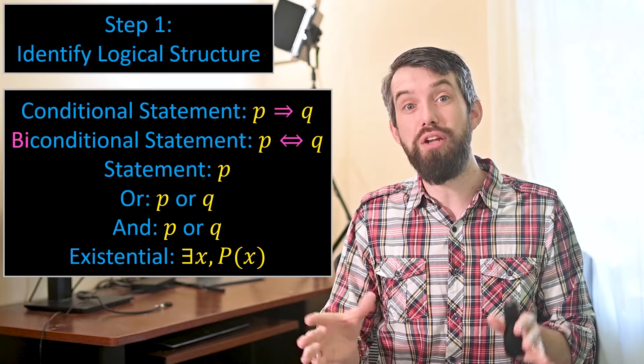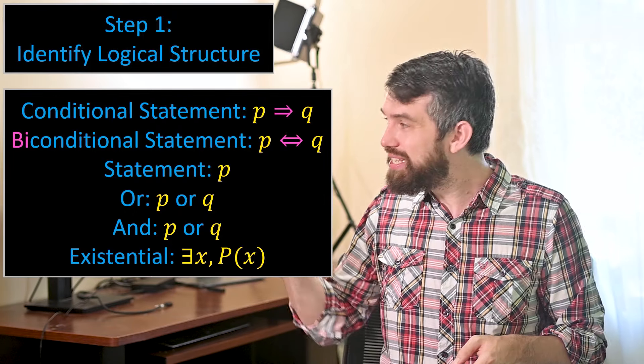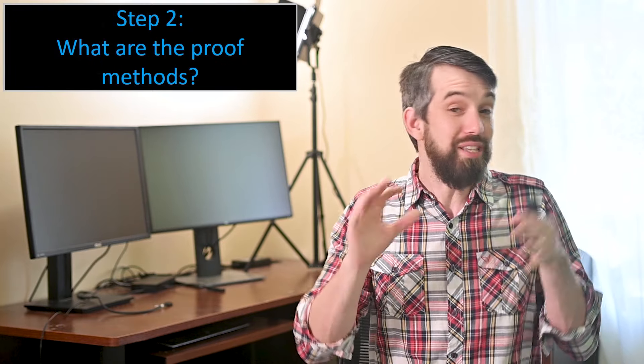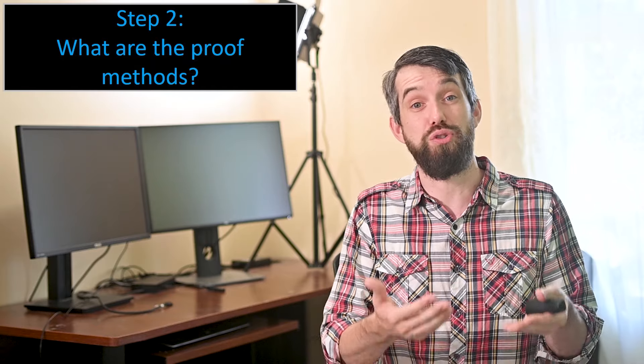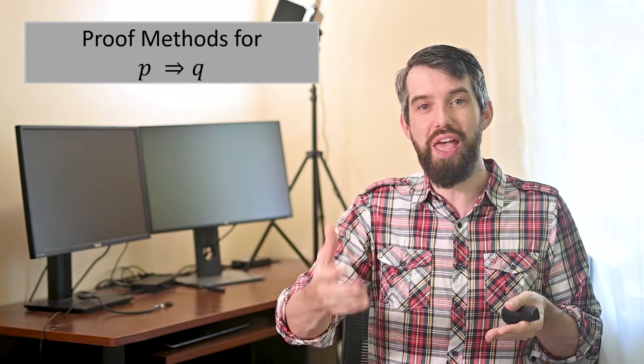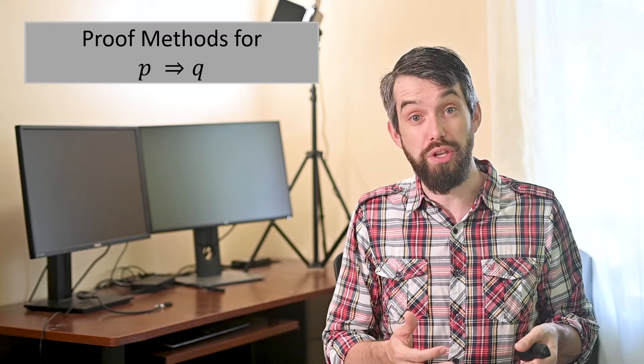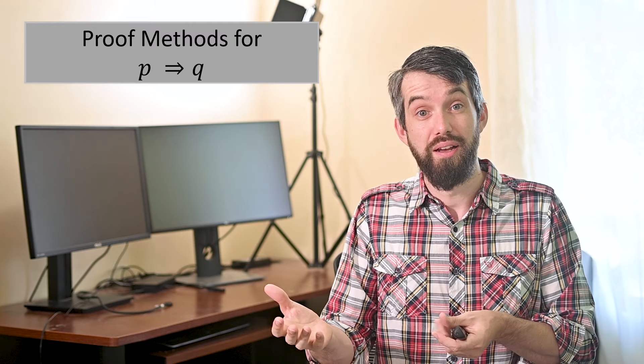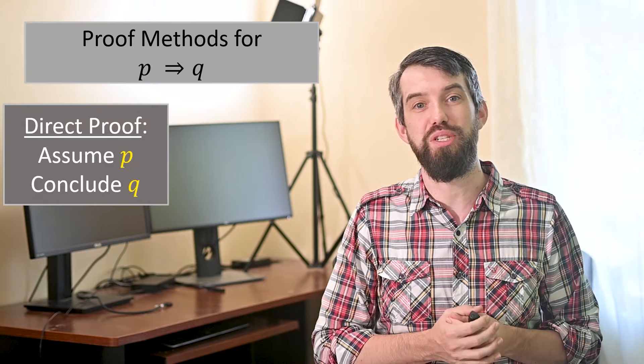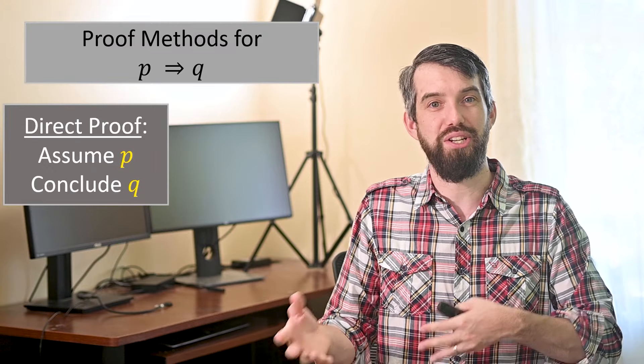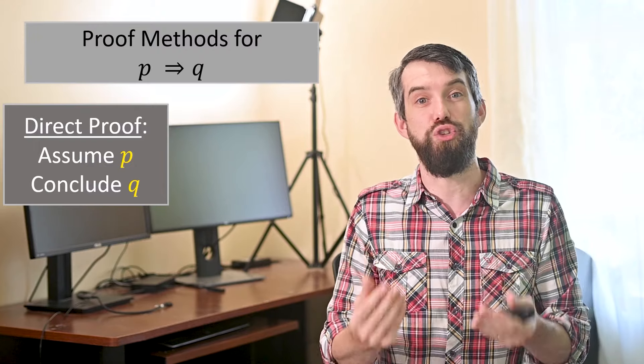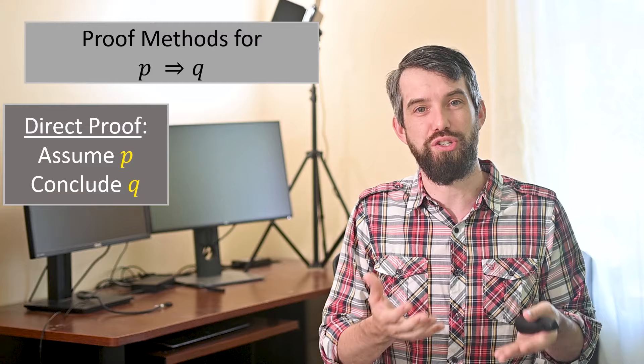Okay, so after you've analyzed the logical structure and figured out what you're doing, the next step would be to figure out what method you're going to use to prove it. There's actually a bunch of different methods, and it depends on what the structure of the claim was. So going into the most common one, the proof methods for a conditional if P, then Q. It turns out there's a bunch of different methods you can use. The most direct one is, uninspiringly, called a direct proof. It says, just assume the assumption P, and then you do some manipulations until you've managed to conclude the conclusion Q. You just start at the assumptions and move directly towards the conclusions, and this is probably the most common proof structure you'll see.